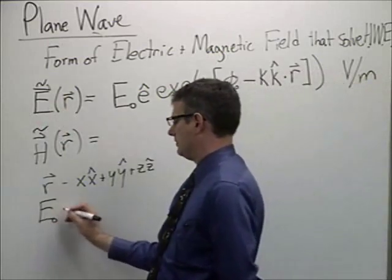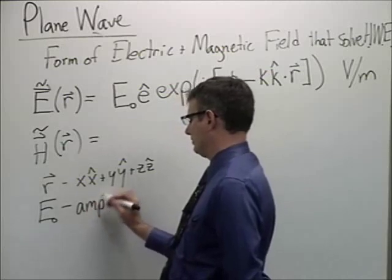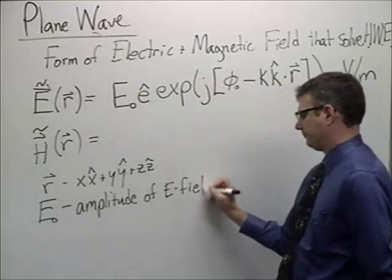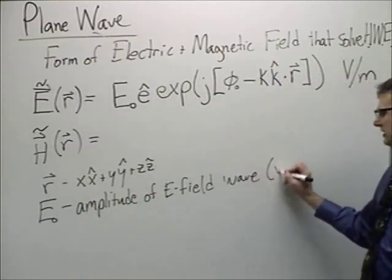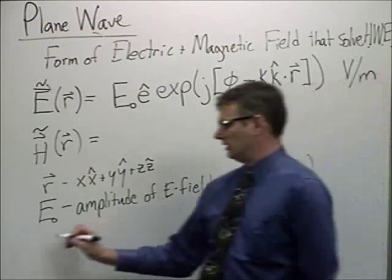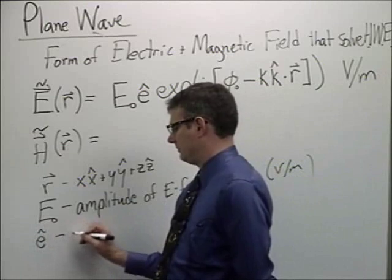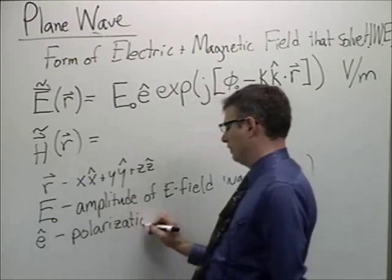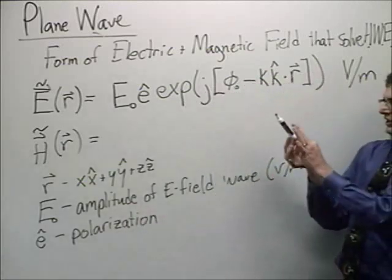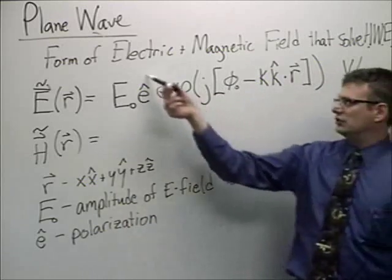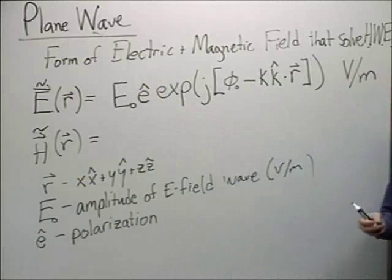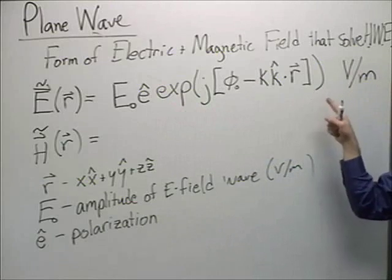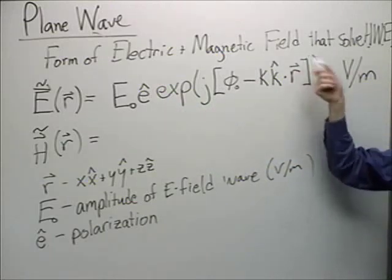E naught is equal to the amplitude of the E field wave, units of volts per meter. E unit vector is called the polarization of the wave. It points in the direction that the E field points. And the two of these together tell you the magnitude and the direction of the E field. This basically will just, anything that you append to this is really just a function of phase. And that phase is the only place where the positional dependence shows up.